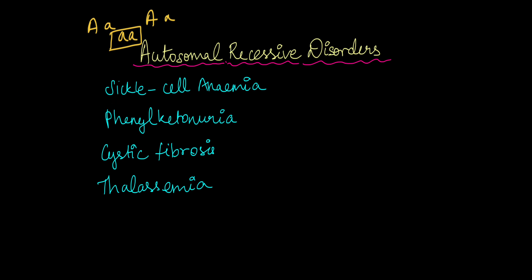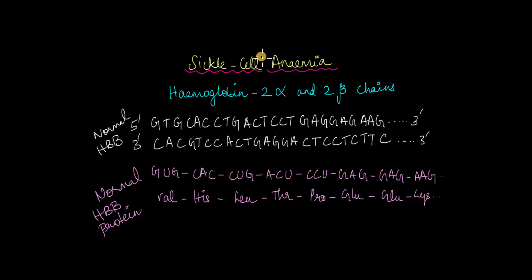First, we'll start with sickle cell anemia. From the word anemia itself, you might be able to guess that it has something to do with blood, something to do with hemoglobin, and you're absolutely right.